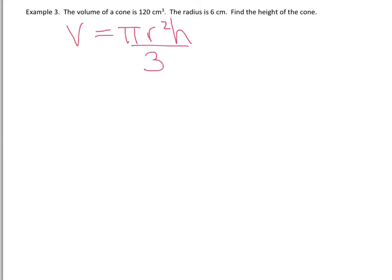So let's substitute in the values that we know from the question. We know that the volume is 120. We're going to leave pi the way it is. We know that the radius is 6. We are trying to find the height, so we're going to leave it as h, and that's all over 3.